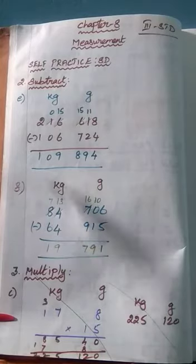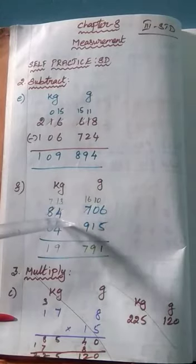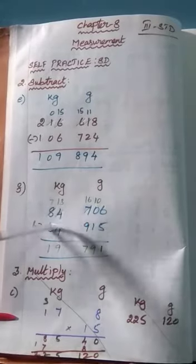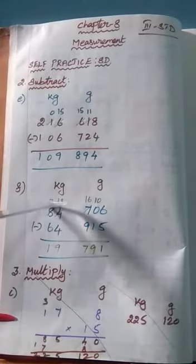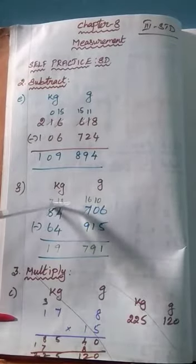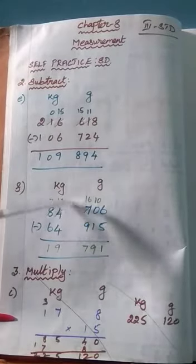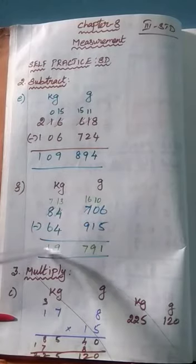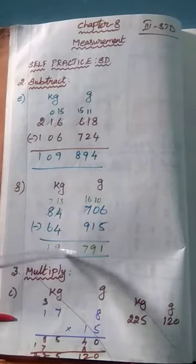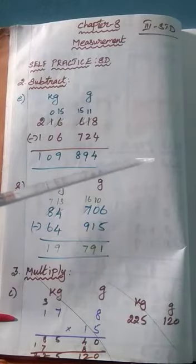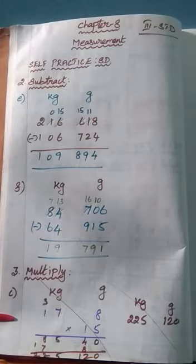16 minus 9 is 7. Then here also, 3 minus 4 — you can't subtract. Again borrow 1 from the neighbor number 8, so it becomes 7. 13 minus 4 is 9. 7 minus 6 is 1. So your answer is 19 kg, 791 gram.